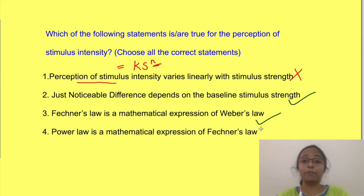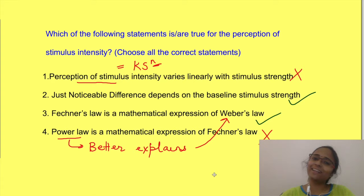Third option is also correct because Fechner tried to give a mathematical explanation to Weber's concept. But the fourth option is incorrect since both Fechner and power law are mathematical explanations of Weber's concept, but power law is an improvement over Fechner's law. Okay? Thanks for watching the video. If you liked it, do not forget to subscribe to the channel Physiology Open. Thank you.